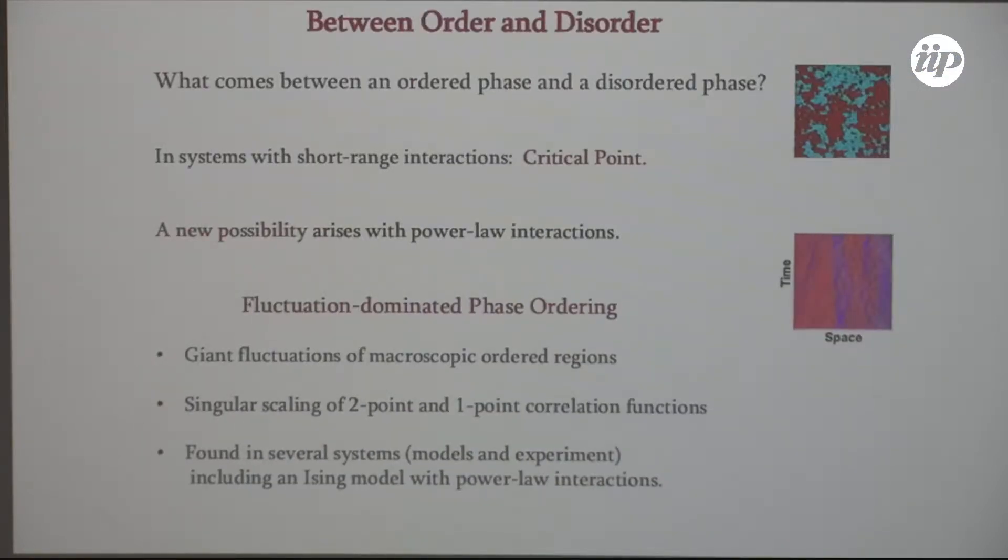Let's start thinking about this. Suppose you have an ordered state and a disordered state and you go between. You ask what is the nature of the state that comes in between? Normally you would think, and you'd be right most of the time, it's a critical point. We are very familiar with a critical point. Here is a critical state - power law decays of correlation functions, fractal structures, and critical exponents which characterize everything.